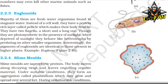Euglenoids: The majority are freshwater organisms found in stagnant water. Instead of a cell wall, they have a protein-rich layer called pellicle which makes their body flexible. They have two flagella — a short and a long one. Though they are photosynthetic in the presence of sunlight, when deprived of sunlight they behave like heterotrophs by predating on other smaller organisms. Interestingly, the pigments of euglenoids are identical to those present in higher plants. Example: Euglena.